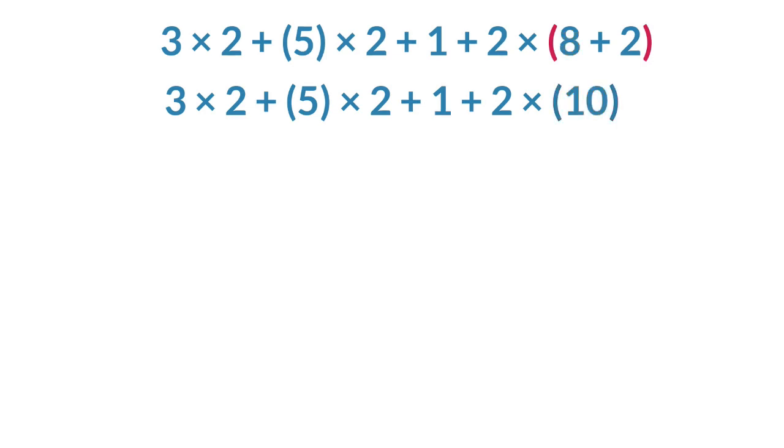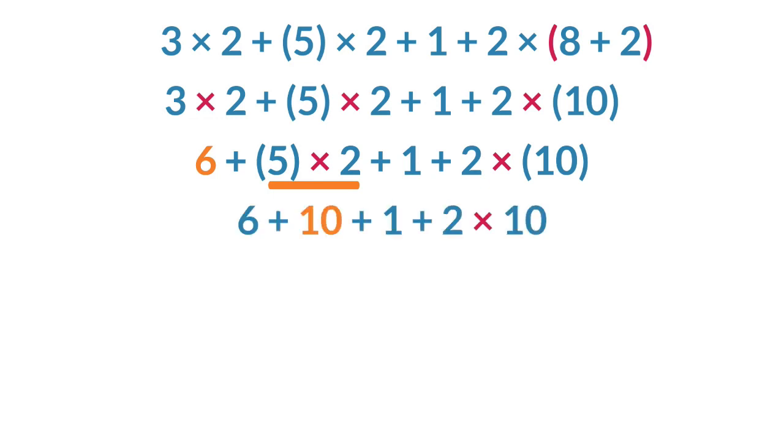Now that everything is handled inside the parentheses, we look for exponents. However, there are none in this expression. Next, we look for multiplication and division from left to right. We start with the 3 and 2. Multiplying these gives 6. Our next multiplication is with the 5 and 2 for a product of 10. Our last multiplication is the 2 and 10, whose product is 20.